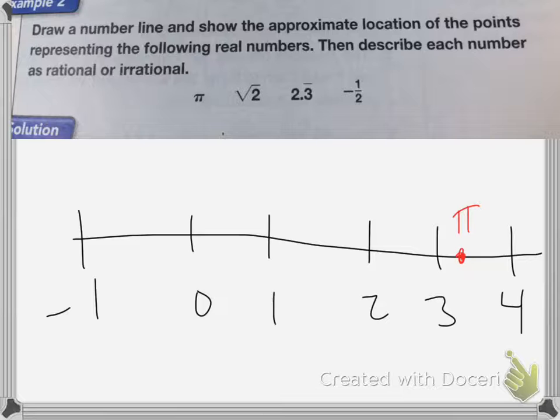And then the square root of 2, we know would have to be somewhere between 1 and 2, because 1 squared is 1 and 2 squared is 4. So it has to be somewhere in between these two numbers. So we might say it's right about here, about in the middle.